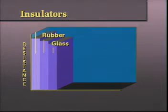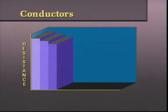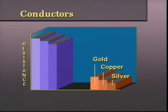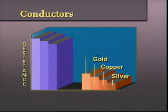Glass and rubber are good insulators. Some plastics have an even higher resistance. Even among metals there are differences in conduction. Silver is better than copper, which is better than gold. Of the metals having a higher resistance, several are used in special electrical applications.